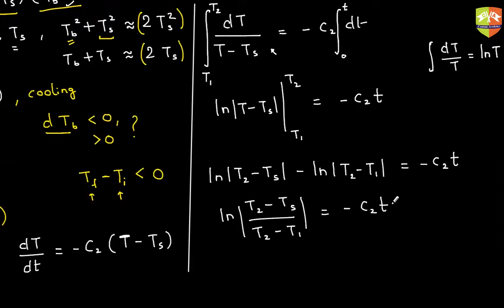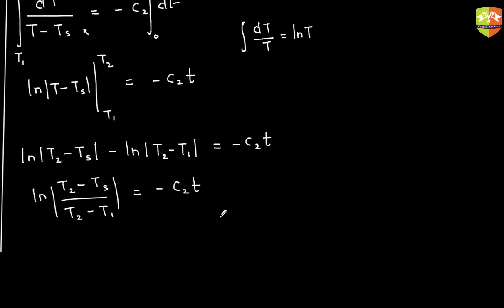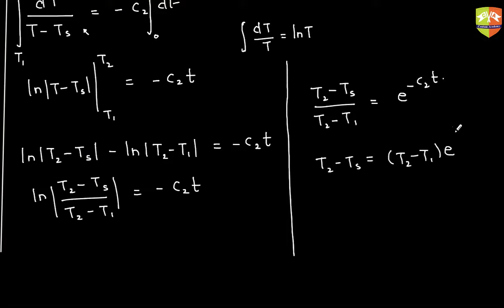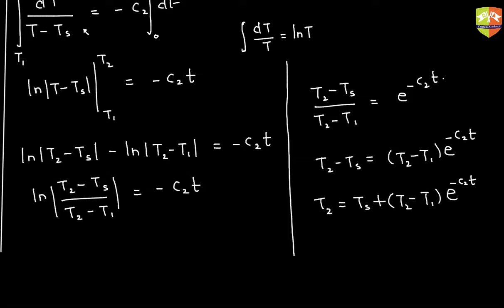Simplifying further: (T2 - TS)/(T1 - TS) equals e to the power of minus C2·t. So T2 equals TS plus (T1 - TS)·e^(−C2·t). This derivation may not be done in school, but it is in the textbook.